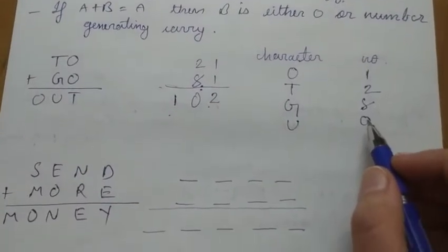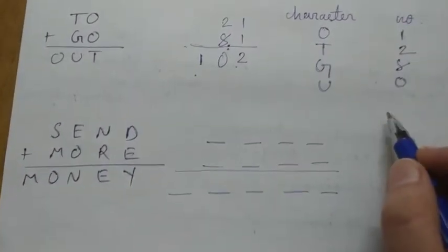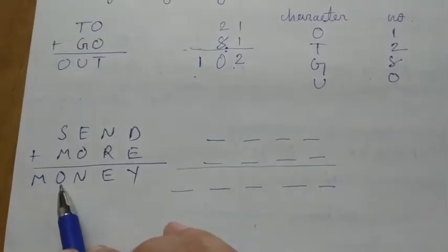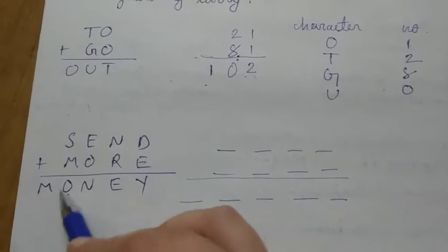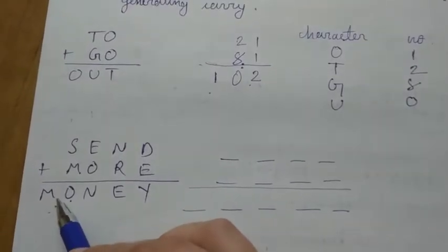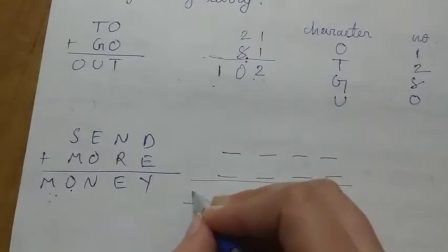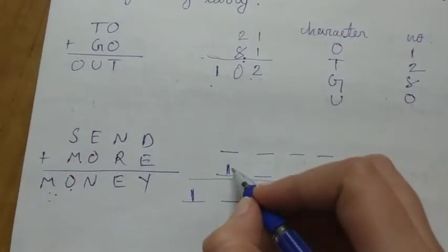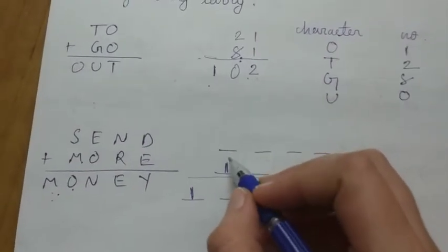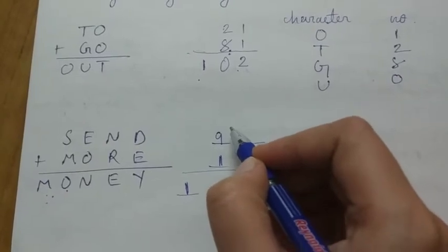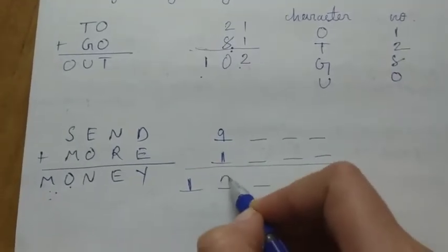Let's see the second example. Here we can see S plus M equals O, and a carry is being generated, that is M. So the possible value of M could be 1. I am placing 1. Then I have to generate a carry, so I am selecting S equals 9. Then the value of O will be 0.